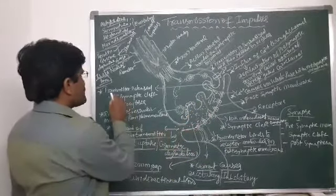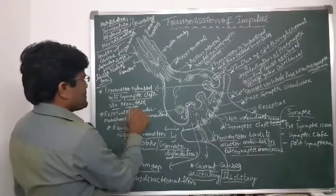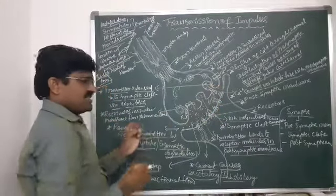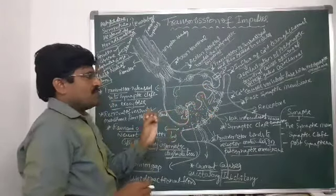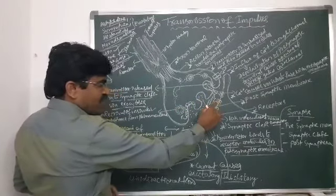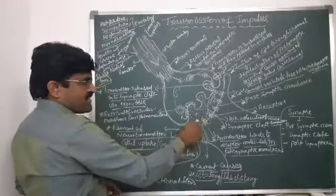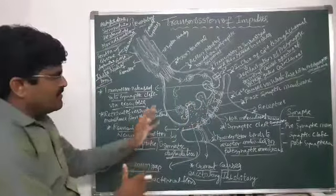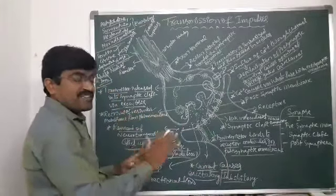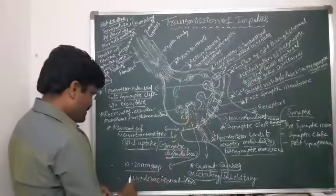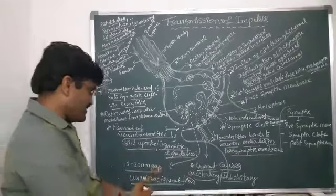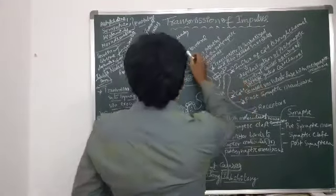The transmitter is released into the synaptic cleft via exocytosis. Exo means pushing out, so the exocytosis process releases the transmitter into the synaptic cleft. The neurotransmitter then slowly moves and reaches the receptors of the dendrites area, carrying the message along with it. The resulting current then causes excitatory or inhibitory effects based on the type of transmitter. In chemical transmission, unidirectional flow occurs, whereas in electrical transmission, bidirectional flow is possible.